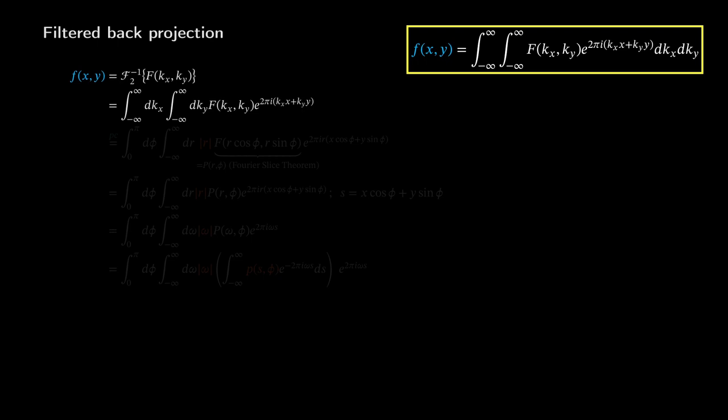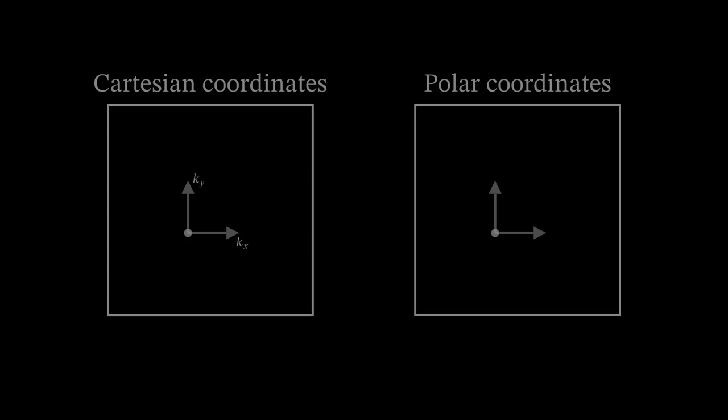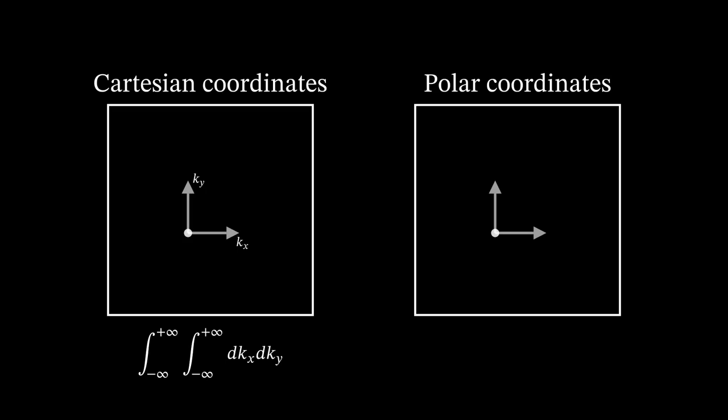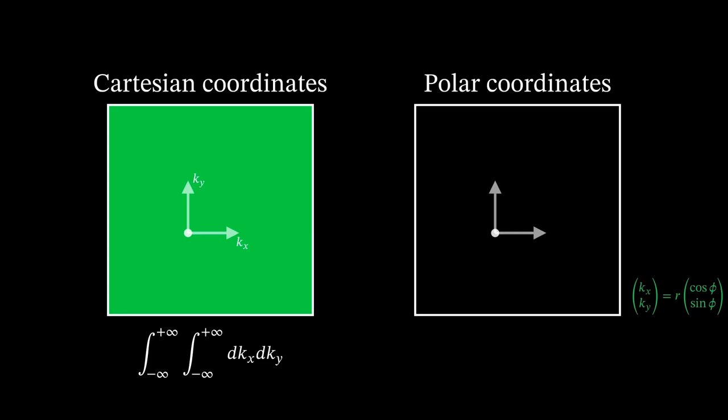Now we are seeking for a way to apply the Fourier slice theorem. In order to do so, we first have to change to polar coordinates and adjust the integration limits accordingly. The current integration limits are going from minus infinity to infinity. As we have a Cartesian coordinate system, we have a simple and square-shaped area element that is used to sample the whole k-space.